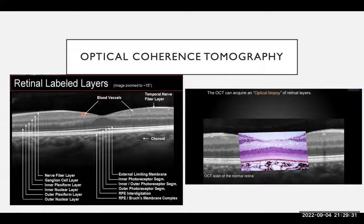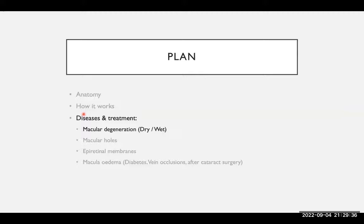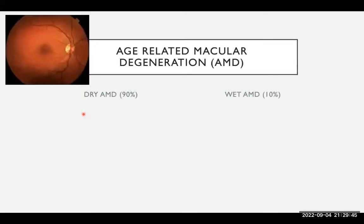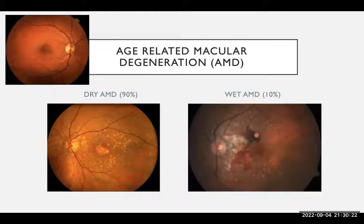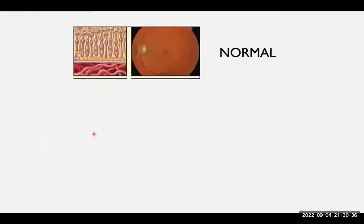Let's talk about macular degeneration, which is undoubtedly the most common macular disease we encounter. Age-related macular degeneration is the major cause of blindness in the UK and in the developed world generally — a major cause of irreversible damage and blindness. There are two types: dry macular degeneration, which accounts for 90% of cases, and wet macular degeneration, which represents only 10%.